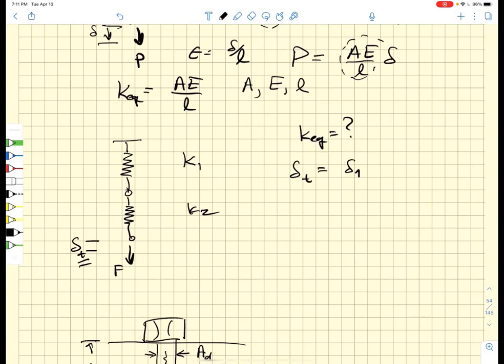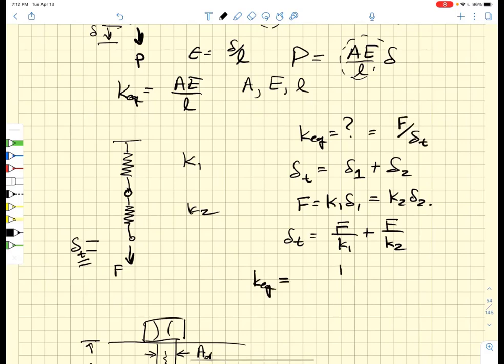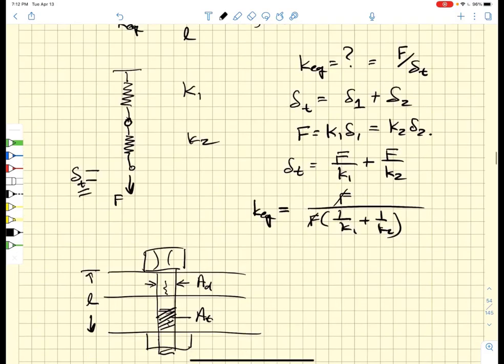The total deformation, I'll call this delta T, is going to be equal to the amount of deformation that is in spring one plus the amount of stretch that is in spring two. Because these two springs are in series they both experience the same force. The force is going to be equal to K1 delta one which is going to be equal to K2 delta two. If we solve for those deltas, the total deformation is going to be equal to F over K1 plus F over K2. One over the equivalent spring constant is equal to one over K1 plus one over K2.